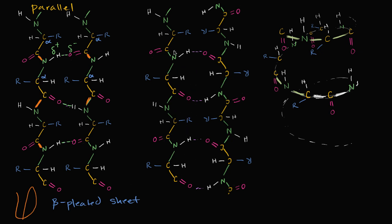Now this one — on the left side we go nitrogen, alpha carbon, carbonyl carbon; nitrogen, alpha carbon, carbonyl carbon. But on the right side, we're going carbonyl carbon, alpha carbon, nitrogen — we're going in the opposite direction. In fact, to even construct this, I copied and pasted it but rotated it upside down. You still have the hydrogen bonds between the partially positive hydrogen end of the nitrogen-hydrogen bond and the partially negative charge at the oxygen. These backbones are parallel but going in different directions — so we would call these anti-parallel beta-pleated sheets.